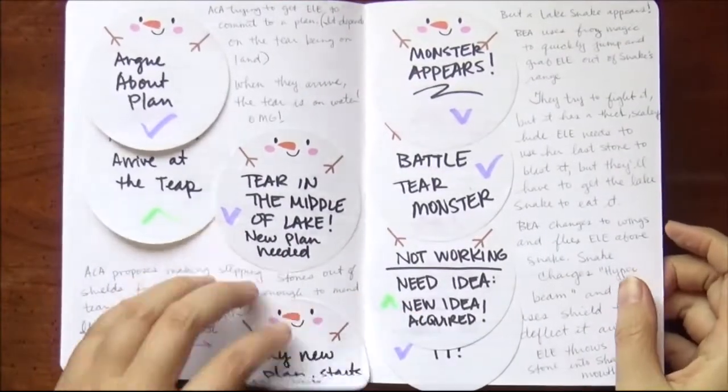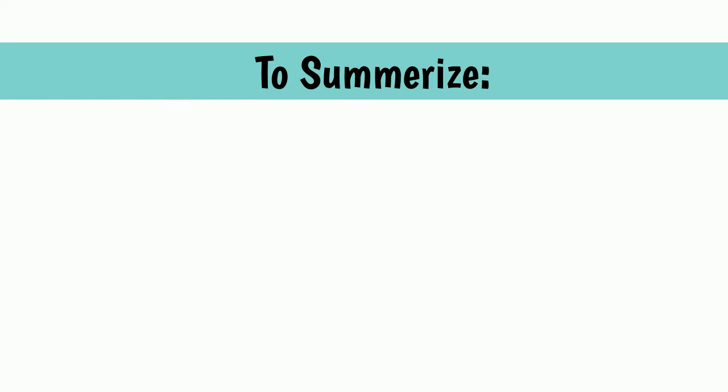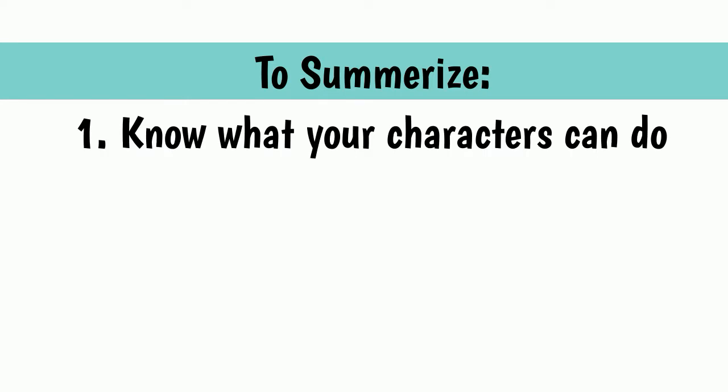I'm going to summarize the process in case someone wants to try out this story beats method. Step one: you need to know what your characters can do. They don't need names or designs yet — you just need to know there's one who can do explosions, one who can run really fast, one who can fly. You just need to know what powers you have at your disposal so you know how your characters can go about problem solving.